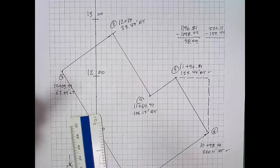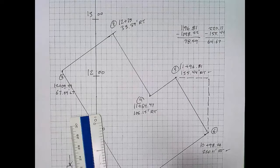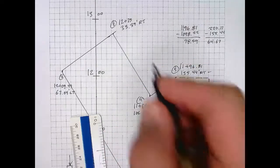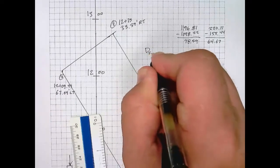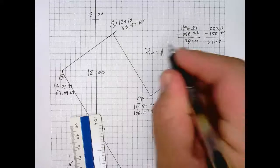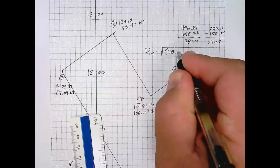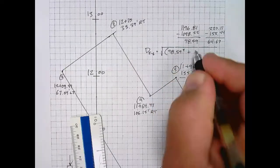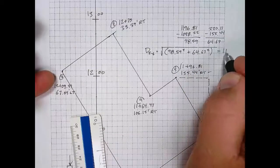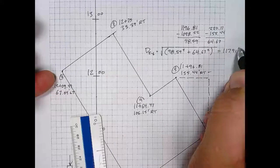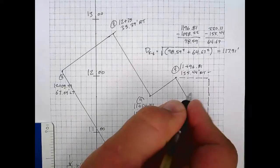My right triangle's perpendicular sides are 98.59 feet by 64.67 feet. So the hypotenuse of that triangle, or we can call it the distance from five to six, is going to be the square root of the sum of the squares of these two sides. The result of our computation then is 117.91 feet. That is the length of the line five to six.